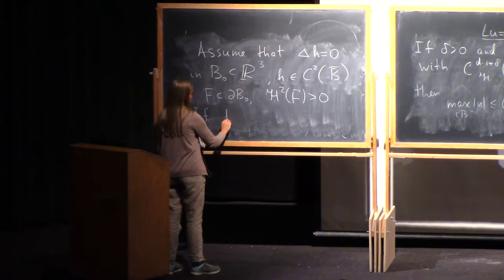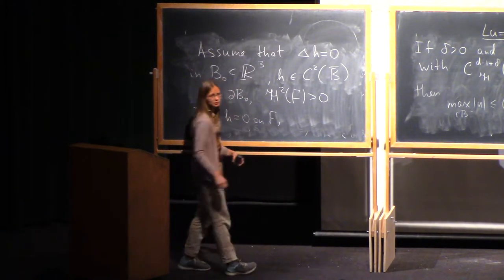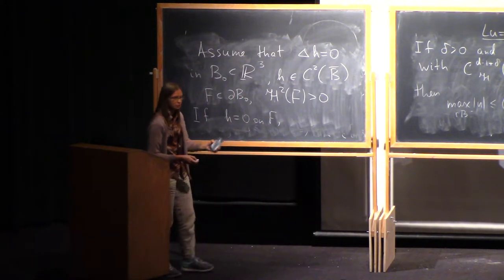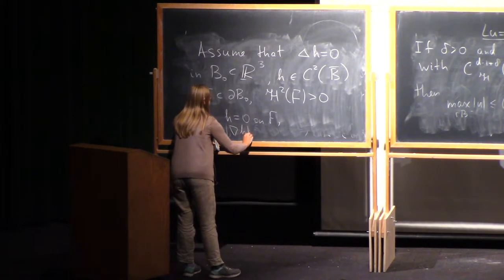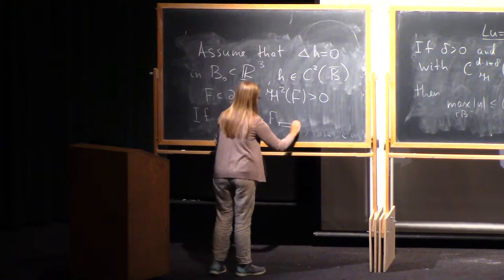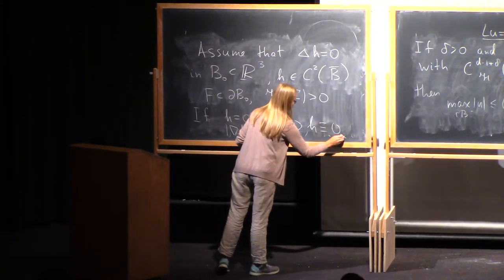Suppose that H is 0 on F together with its normal derivative or together with gradient. Does this imply that the function is 0?